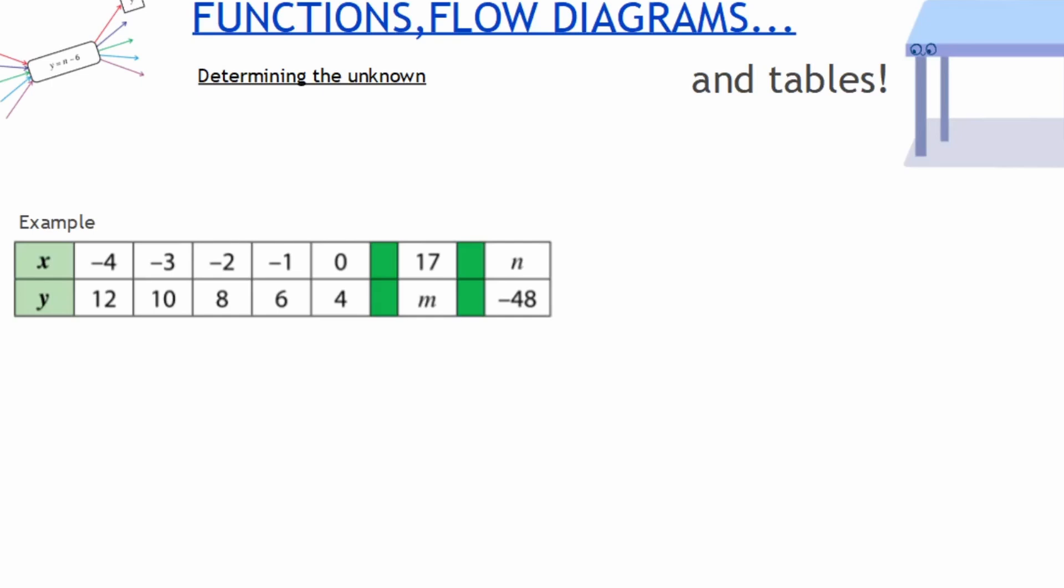Let us look at a question where we are combining each of these aspects where we determine a function and then use that function to calculate unknowns. So let us jump straight into it. Determine the following function. Let us look at the outputs: I go from positive 12 to 10 to 8 to 6 and to 4. We can see at each step we have a constant difference of negative 2.